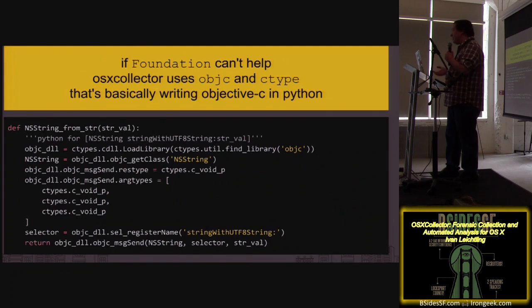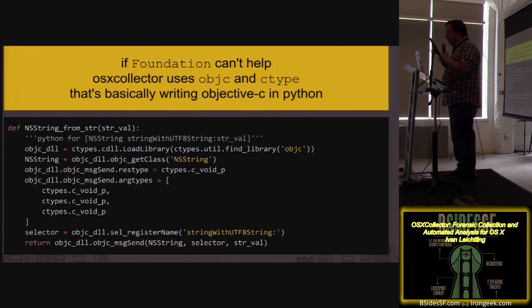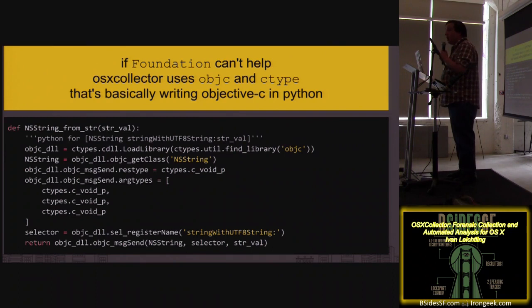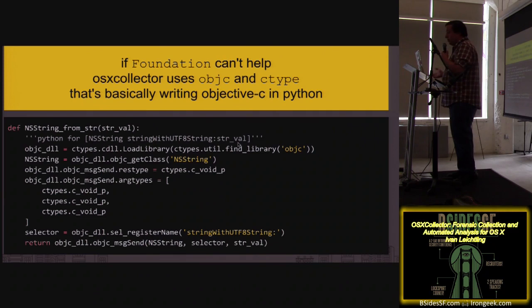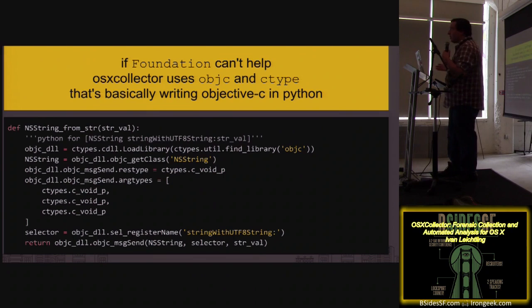Some stuff's not in Foundation, so we said, okay, we'll figure it out. In Python, you can just basically load libraries. Python comes with objc and ctypes packages — on OSX at least — which let you basically call native code, whatever native code you want. This is an example of calling NSString stringWithUTF8String, which is like a constructor for an Objective-C string. It's a bit messy but it meant that with this single file, we could call anything on the system. So now we can collect SQLite DBs, collect plists, and call any system API we want.